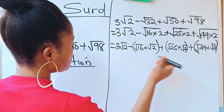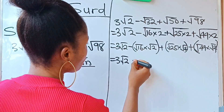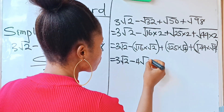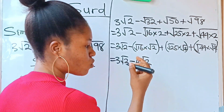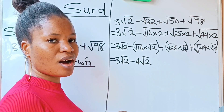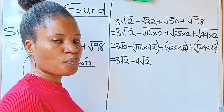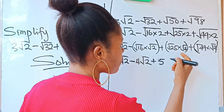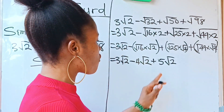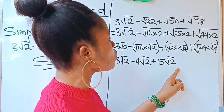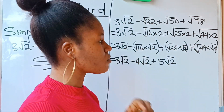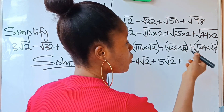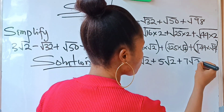Now, evaluating each perfect square root: root 16 is 4, so we have 4√2 — that is the simplified form of root 32. Root 25 is 5, so we have 5√2 — the simplified form of root 50. Root 49 is 7, so we have 7√2 — the simplified form of root 98.